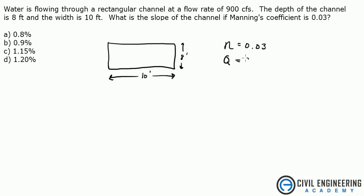Our flow rate is given as 900 cubic feet per second. And we're given the channel, it's 8 feet deep, 10 feet wide. So if you're using your Civil Engineering Reference Manual,